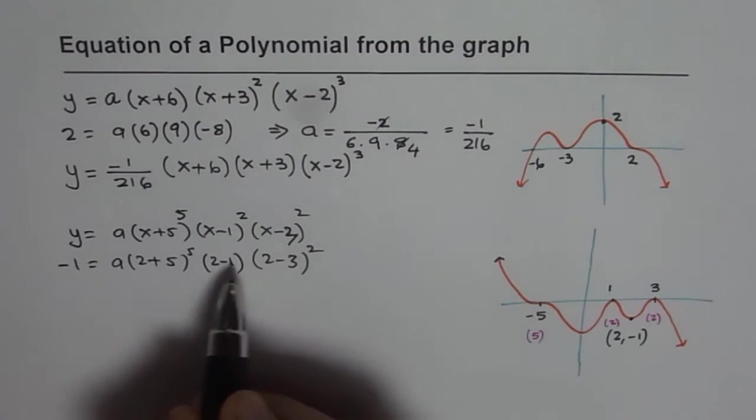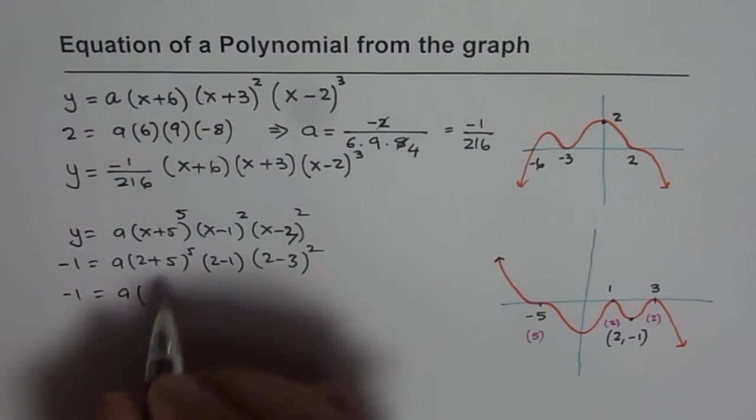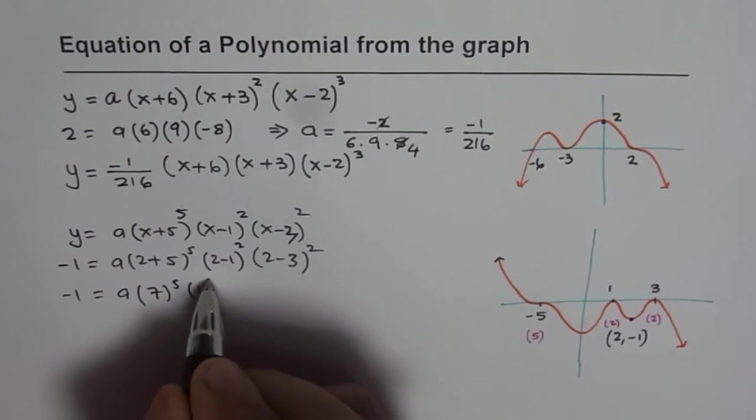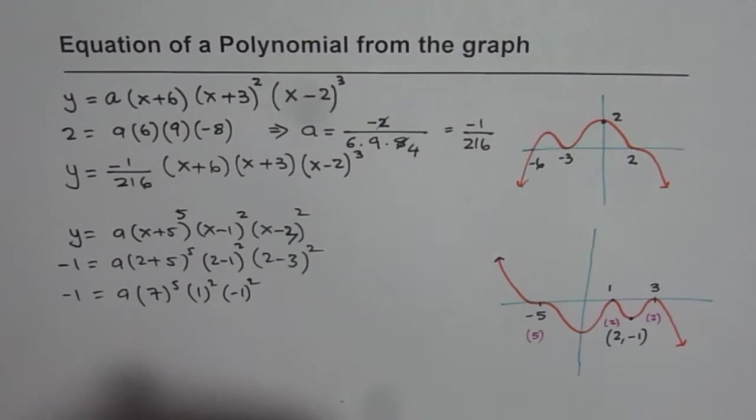Now we can calculate these values using the calculator. So minus 1, a, it is 7 to the power of 5 and this one is square. 2 minus 1 is 1, 1 square. 2 minus 3 is minus 1 square. So that is what we get and that is 7 to the power of 5. So 7 to the power of 5 is equals to 16807.